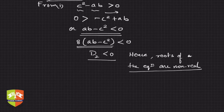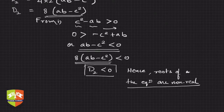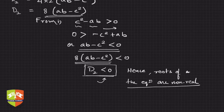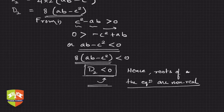The basis of the proof: we found the discriminant of the first equation, extracted the key inequality from the given condition, and then used that to prove the discriminant of the second equation is less than 0. In any mathematics question, try to extract useful information from what is given, keep in mind the goal to be achieved, and bridge those two pieces of information to get the result.